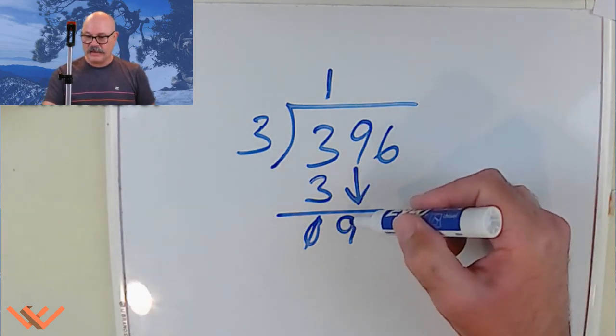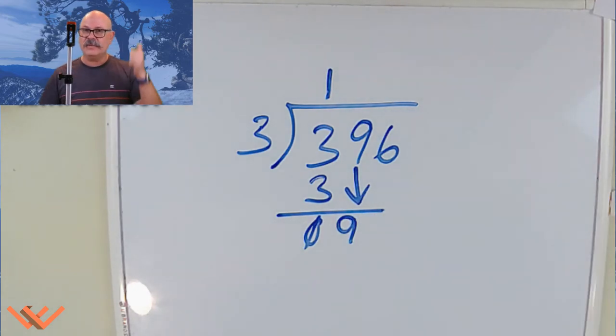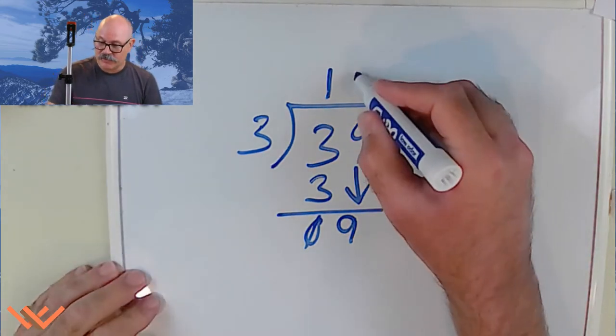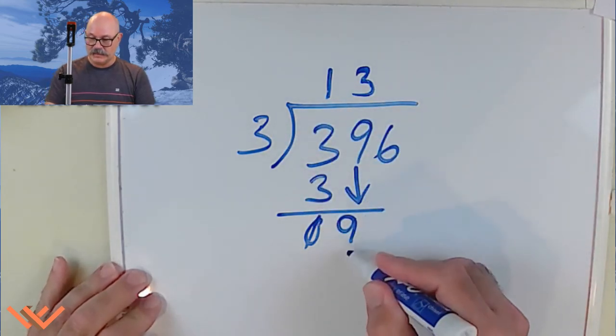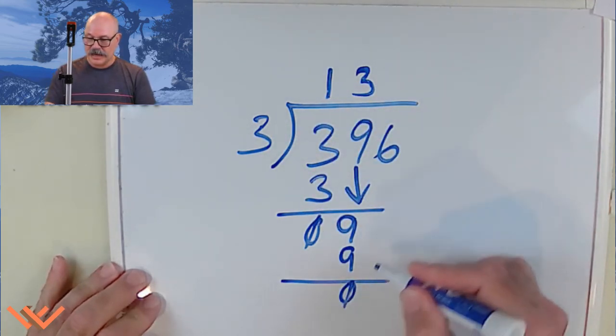How many threes go into nine? Well, I know that three times one is three. Three times two is six. Three times three is nine. Oh! So I should have a three up here as part of my quotient. Three times three is nine.